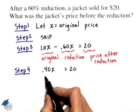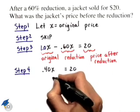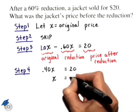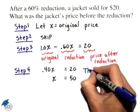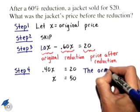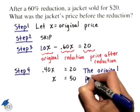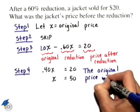If I divide both sides by 0.40, I get that x equals 50. The original price before reduction was $50.